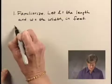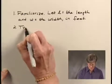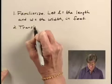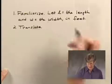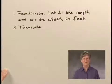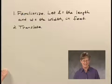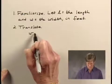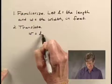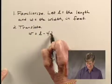Now we'll use the information that we're given to translate to a system of equations. We are told first of all that the width of the court is 42 feet less than the length. So we can translate that as W equals L minus 42.